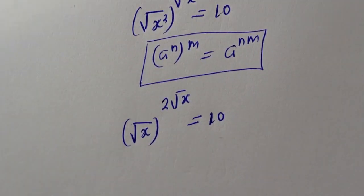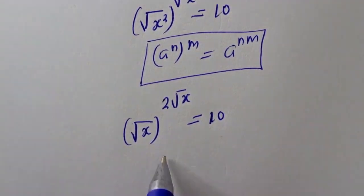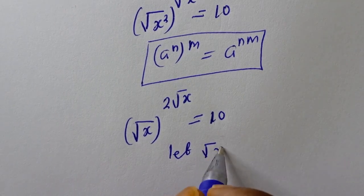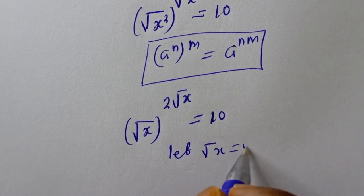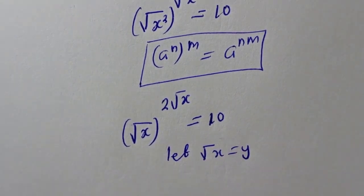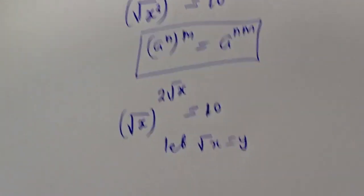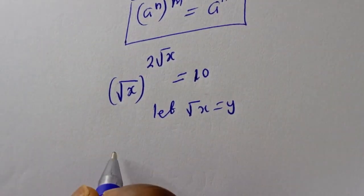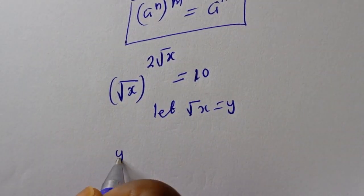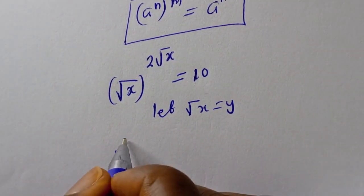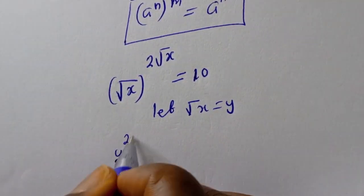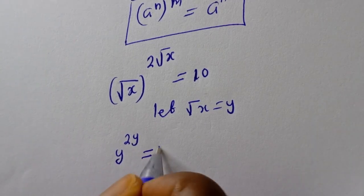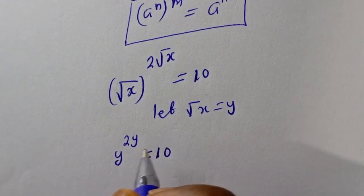Now let square root of s equal y. So this becomes y to the power of 2y is equal to 10.